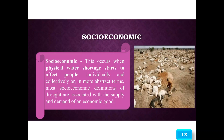Socioeconomic drought occurs when physical water shortage starts to affect people individually and collectively. In more abstract terms, most socioeconomic deficiencies of drought are associated with the supply and demand of economic goods.